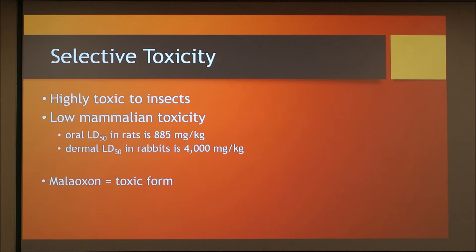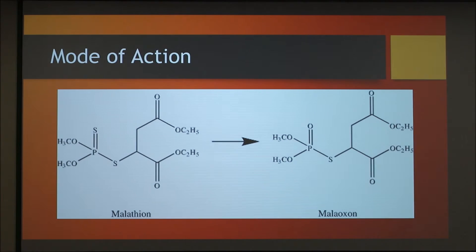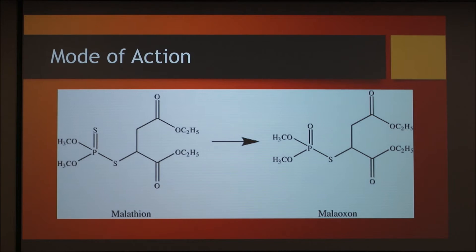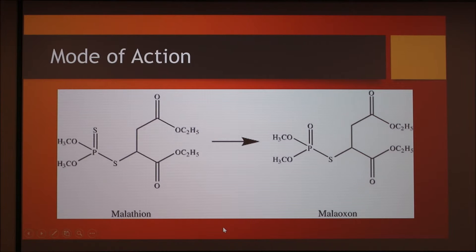So why are mammals not as affected by this insecticide, when most insecticides are extremely dangerous to mammals? Well, this mainly has to do with the toxic form of malathion, malaoxon. Malathion is bioactivated by oxidative desulfuration to malaoxon. Malaoxon is what inhibits acetylcholinesterase. In this figure, you can see the desulfuration, where we have our sulfur group being replaced with an oxygen in malaoxon. Here's your new oxygen where the sulfur group was replaced.